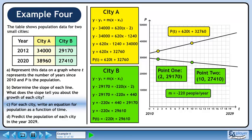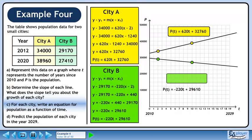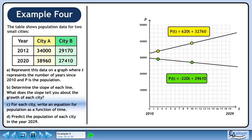We need to write this as a function. We'll use p of t equals minus 220t plus 29,610. Store the function beside its graph and clear our previous work.